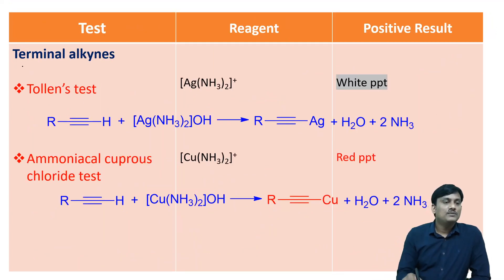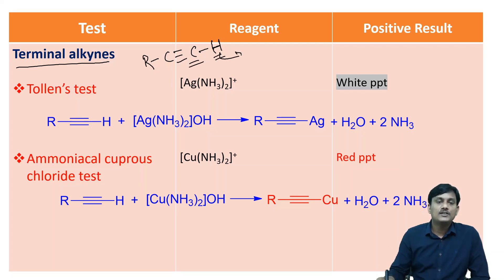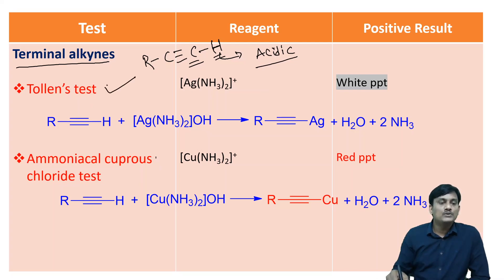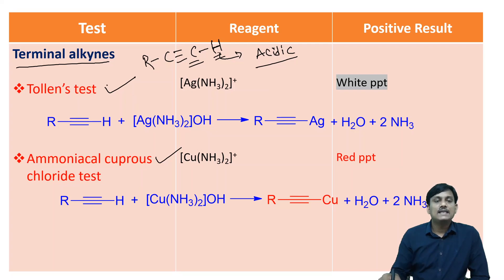Terminal alkynes — what are terminal alkynes? If you take an alkyne with a triple bond C-H, and the triple bond carbon is attached with at least one hydrogen, these hydrogens are acidic in nature — more acidic in nature. These hydrogens will react with Tollen's reagent and also ammoniacal cuprous chloride reagent. Alkynes containing a triple bond C-H are called terminal alkynes, and we also have internal alkynes.